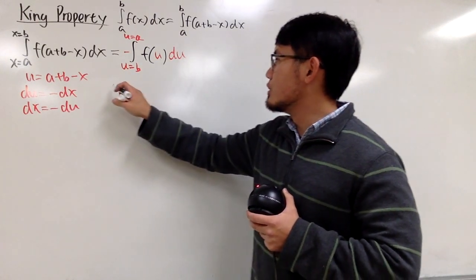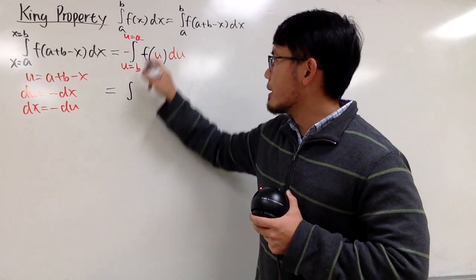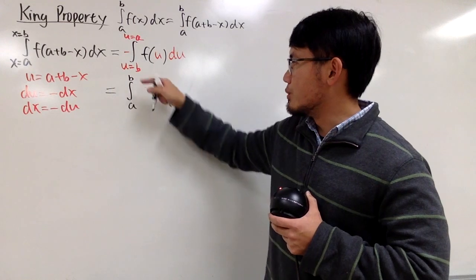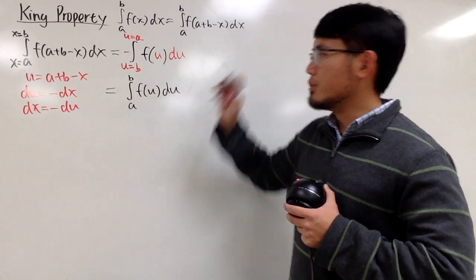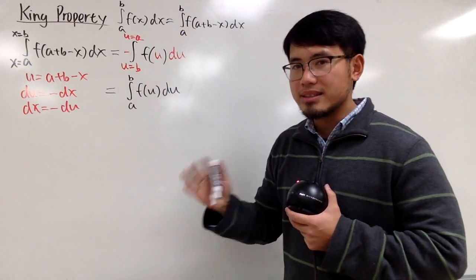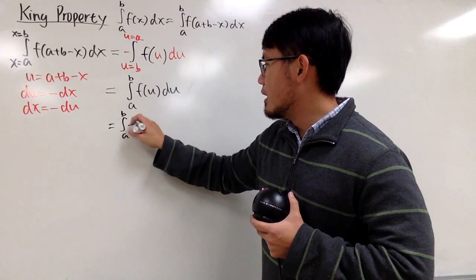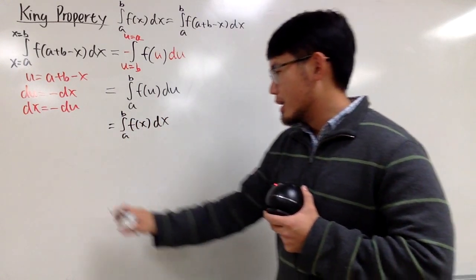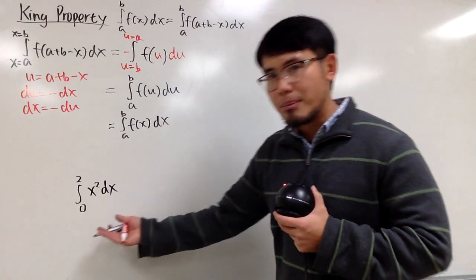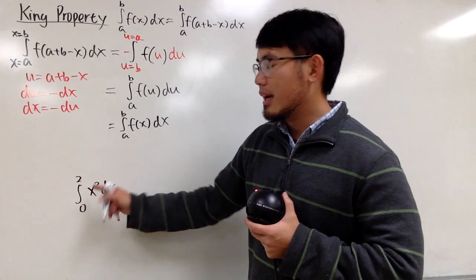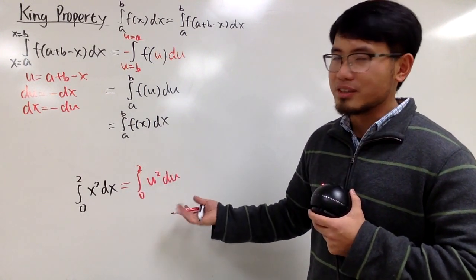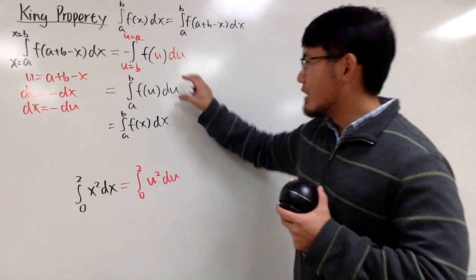So this right here is in fact just the same as the integral from a to b of f(u) du. The u versus x doesn't matter — I can write it as the integral from a to b of f(x) dx. Because if you integrate x squared from 0 to 2, you get the same number as integrating u squared from 0 to 2. That's why they are the same, and we are done with the proof.